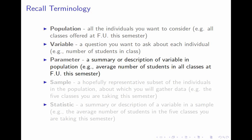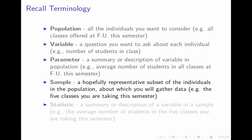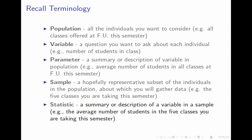That noun phrase, which contains the parameter, the variable, and the population all in one phrase, is the best way to express it. We also talked about a sample, which is the subset of individuals in the population about which you gather data that you hope is representative — maybe the five classes you're taking this semester. A statistic is just like a parameter; it's a summary or description of a variable, but only in the sample, not in the population. In this case you would find the average number of students in the five classes you're taking this semester.